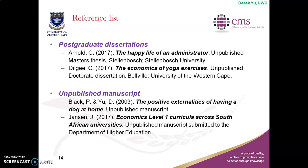For example, here are two examples. Maybe Black and Yu, 2003 — this is the title of the manuscript: 'The Positive Externalities of Having a Dog at Home.' In the whole document you couldn't find further information whether it is a working paper, conference paper, or journal article — you just couldn't figure out the type or nature of publication. Then you end by saying it is an unpublished manuscript.